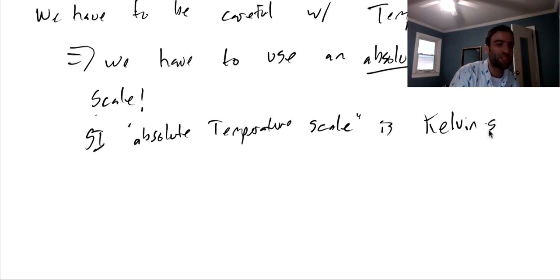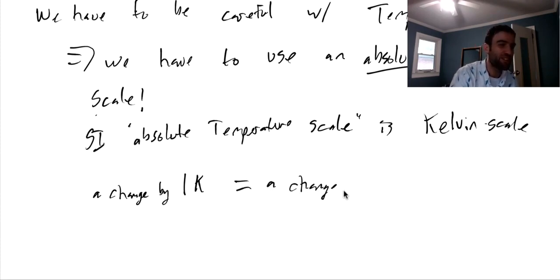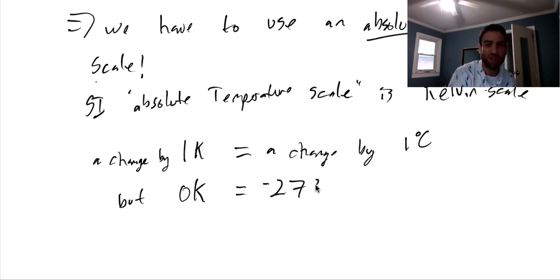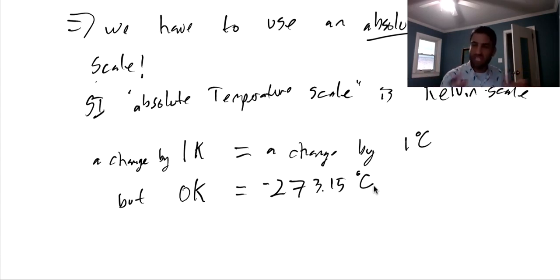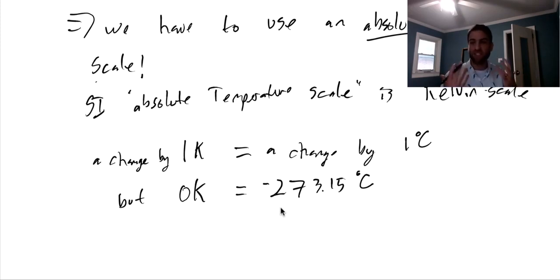We need a temperature scale where zero actually means zero — no internal kinetic energy, no motion of the particles. The SI absolute temperature scale is the Kelvin scale. One Kelvin is defined so that a change of one Kelvin equals a change of one degree Celsius, which is about 1.8 degrees Fahrenheit. But zero Kelvin is negative 273.15 degrees Celsius. Kelvins and Celsius are closely related; it's just that zero Kelvin means no motion — absolute zero — whereas zero Celsius just means water would usually freeze.